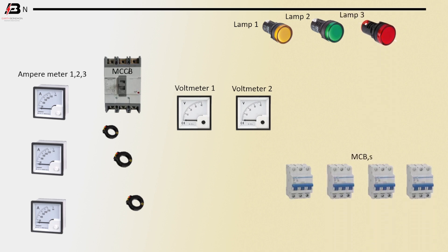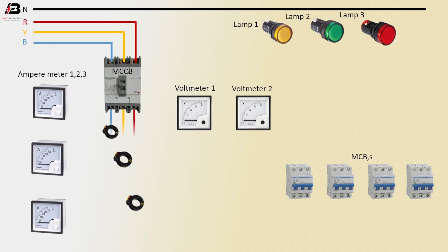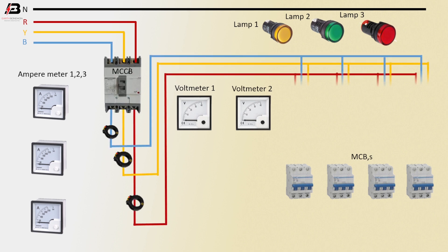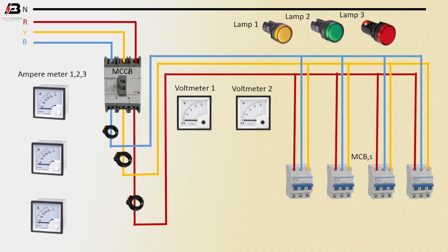Common neutral connection. Phase connection R to MCCB circuit breaker. Phase connection Y to MCCB circuit breaker. And phase connection B to MCCB circuit breaker. 3-phase connection outgoing from MCCB, and go between CT coil to MCCB circuit breakers.